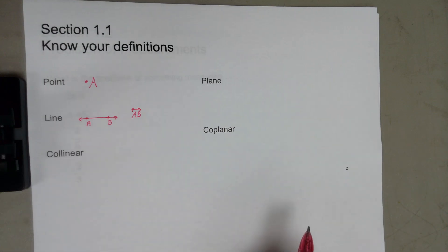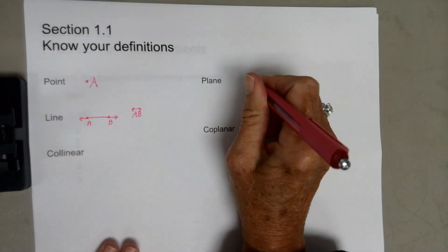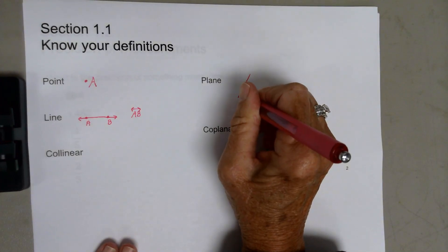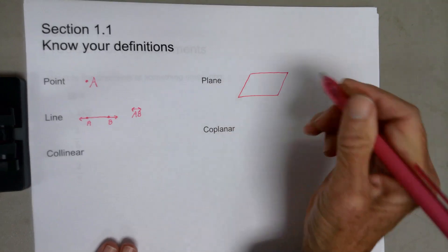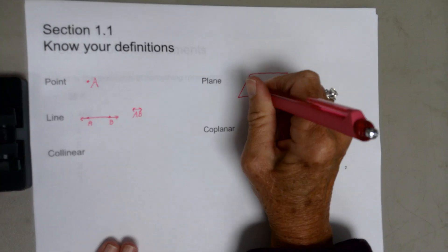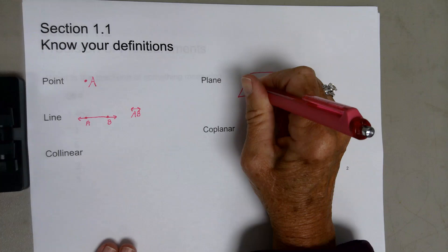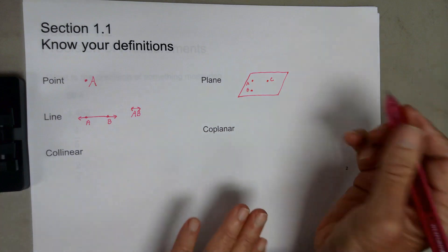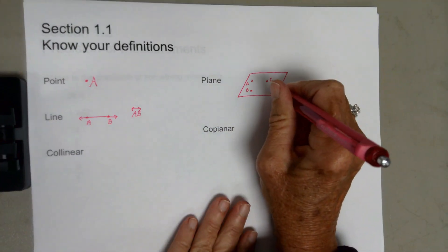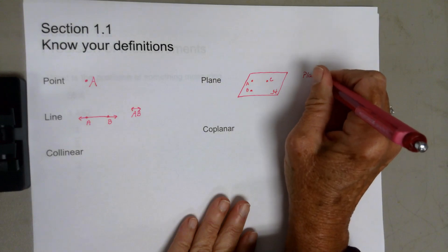A plane would be a flat surface made up of points — so that would be the definition of it. An example: you might draw something that looks like this. Make sure you put three non-collinear points on it to represent a plane. You could put a cursive H down here and call this plane H.